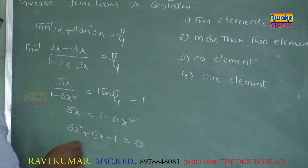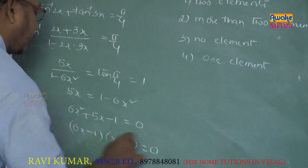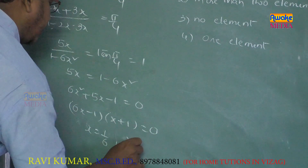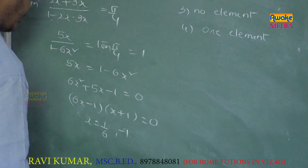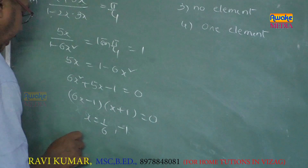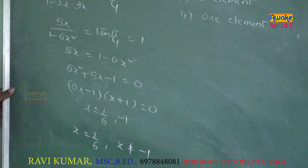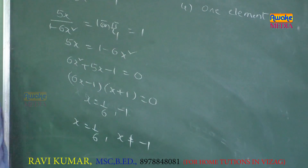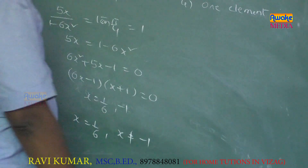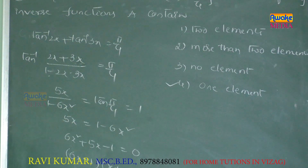Factoring: (6x - 1)(x + 1) = 0, giving x = 1/6 or x = -1. Since we need x ≥ 0, only x = 1/6 satisfies the given equation. So A contains only one element, and the fourth option is the answer.